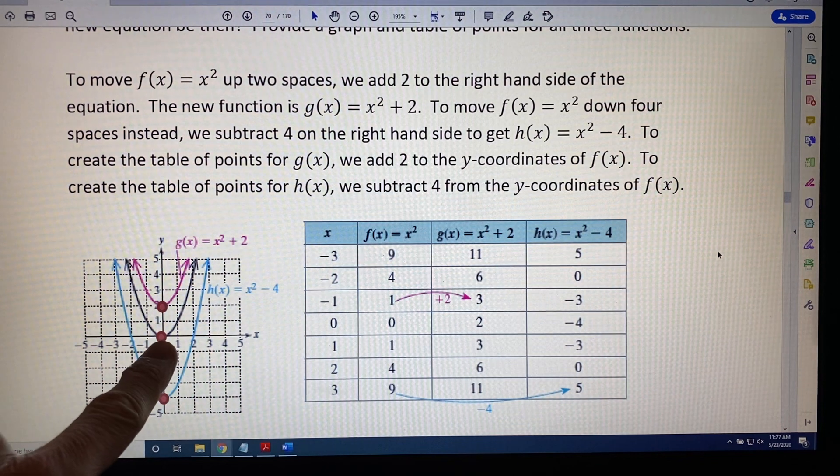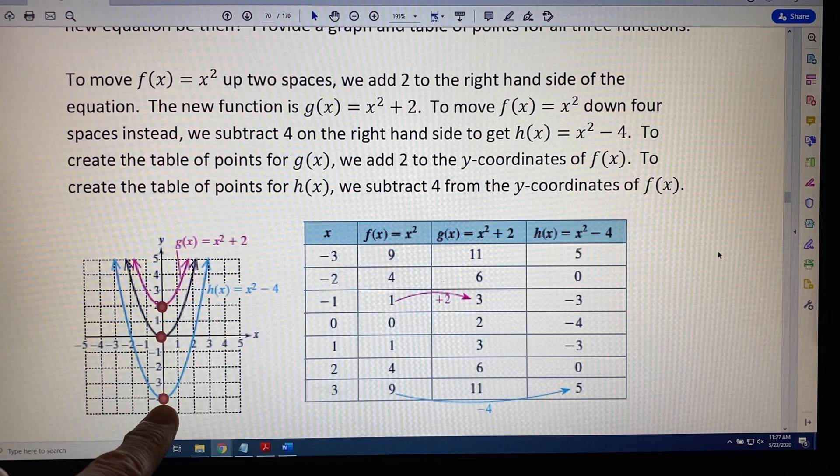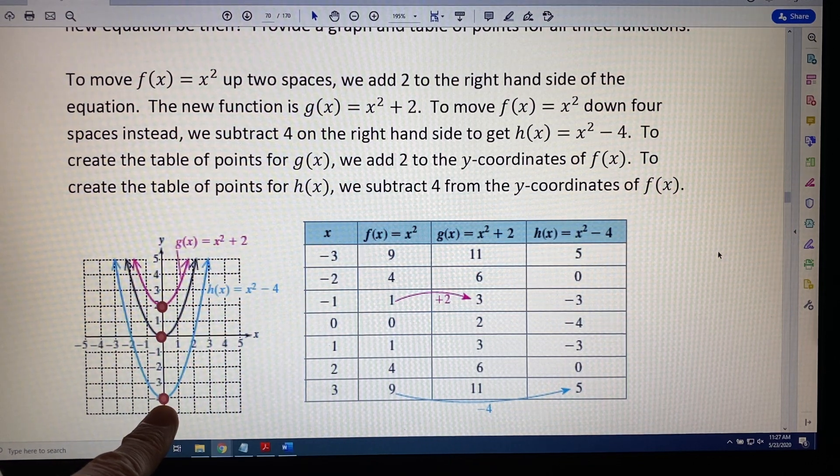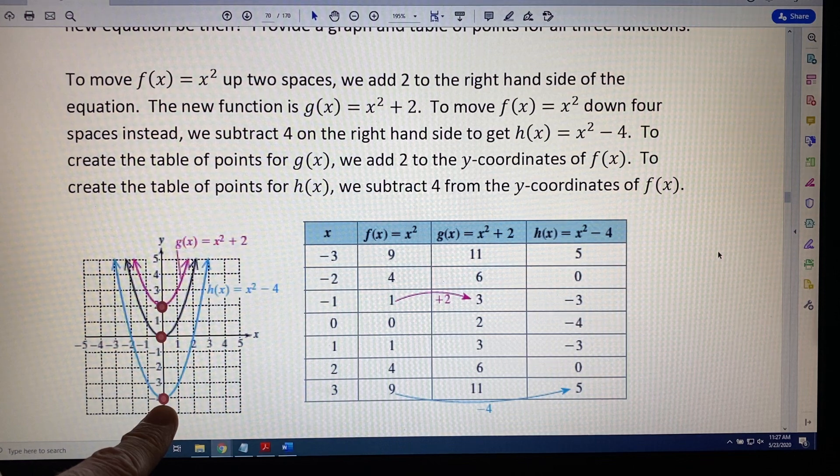Similarly, if you take the points from the black function, f(x) = x², and move all of them down four spaces, it will create the graph of the blue function, h(x) = x² - 4.